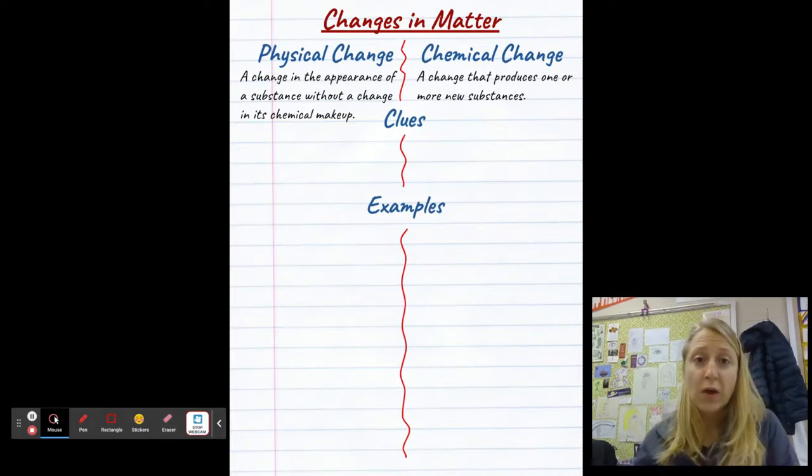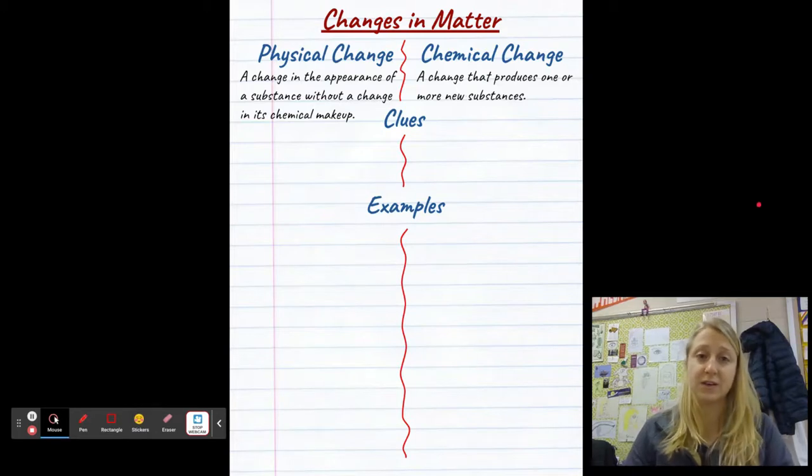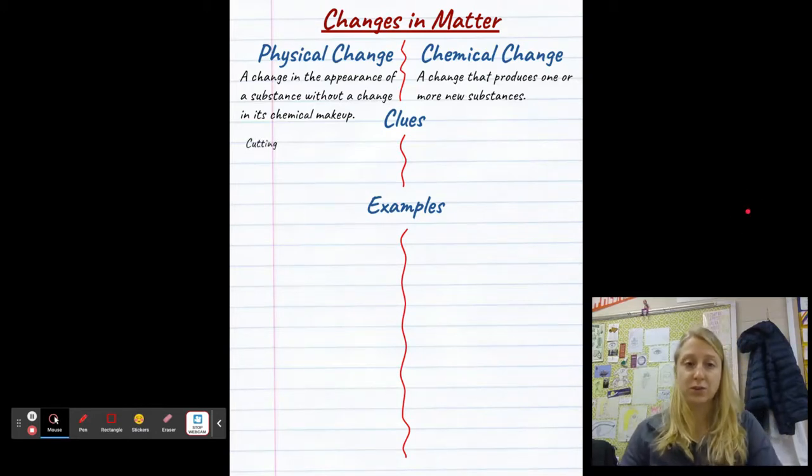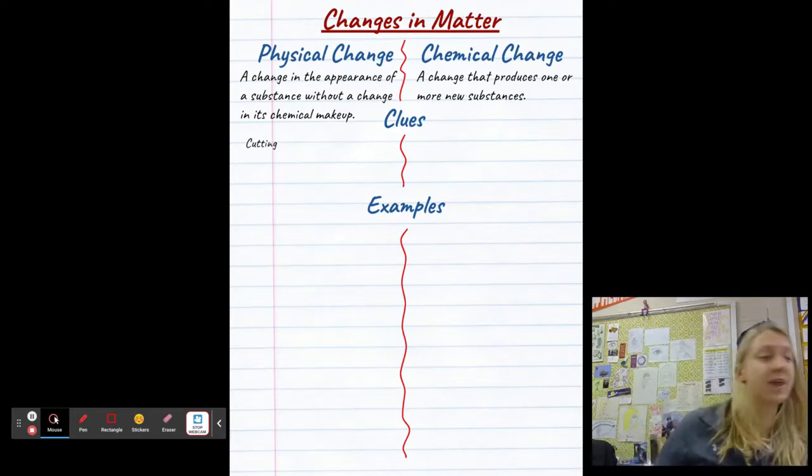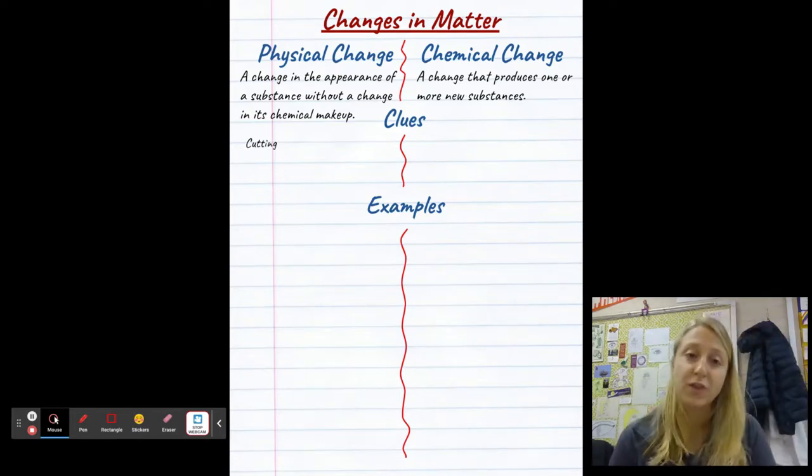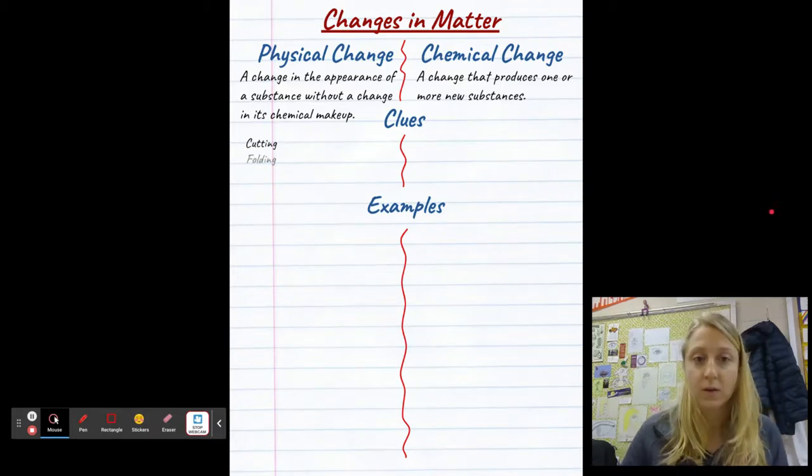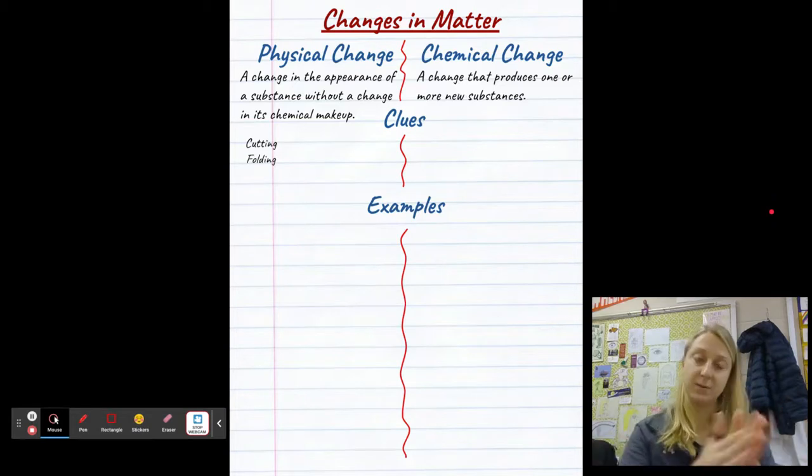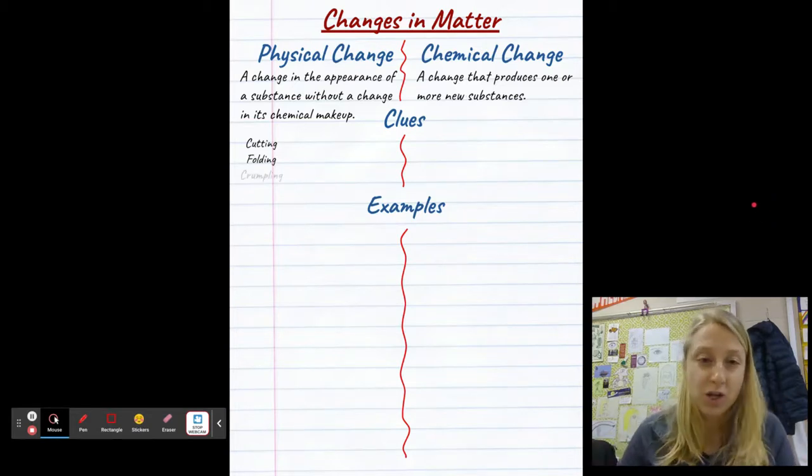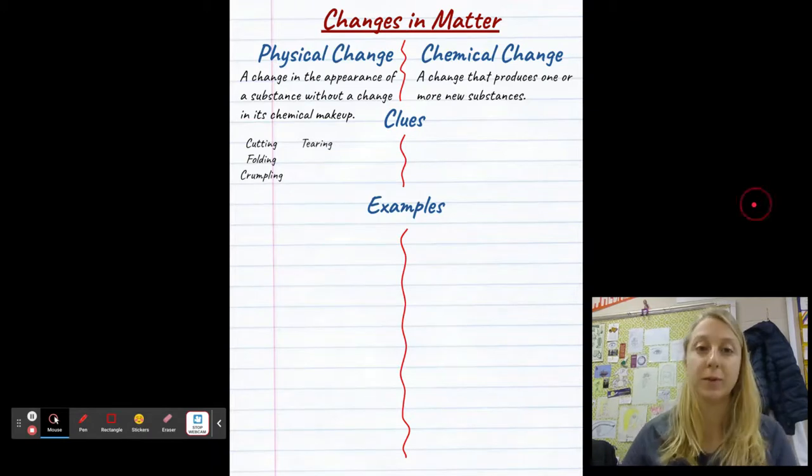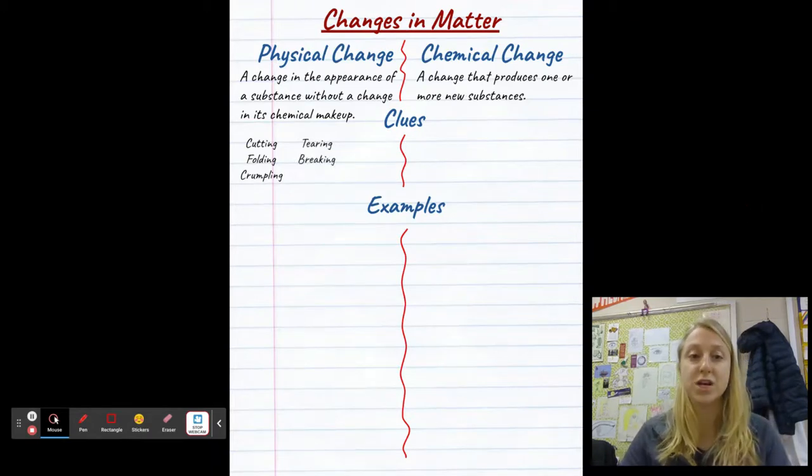All right. So, those are our definitions. Let's look at some clues that these things are happening. So, physical changes. A first clue that a physical change has happened is that I just cut a thing. With scissors or a saw, I'm just cutting a thing. Next would be folding. I gave that example of folding the paper. I'm not chemically changing anything. Crumpling the paper. Tearing the paper. Those are all examples of physical changes.